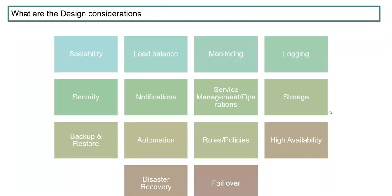Coming to the design considerations, there are plenty of parameters. The previous one was the architecture pillars — and this is the design consideration. Many people get confused between these two. Design considerations are: scalability, load balancing, monitoring, logging, notification on failure, backup and restore, how you scale your systems, how you protect your systems, storage management, rules and policies, automation, high availability, disaster recovery, and failover. These all need to be considered while designing an architecture, and they are different from the architecture pillars we saw in the previous slide.